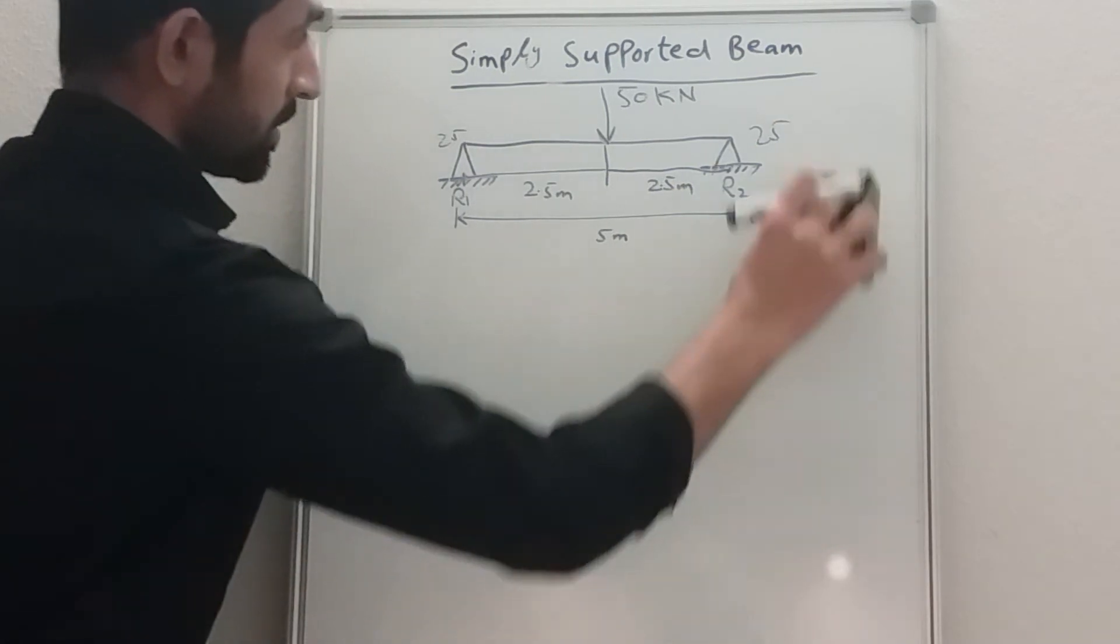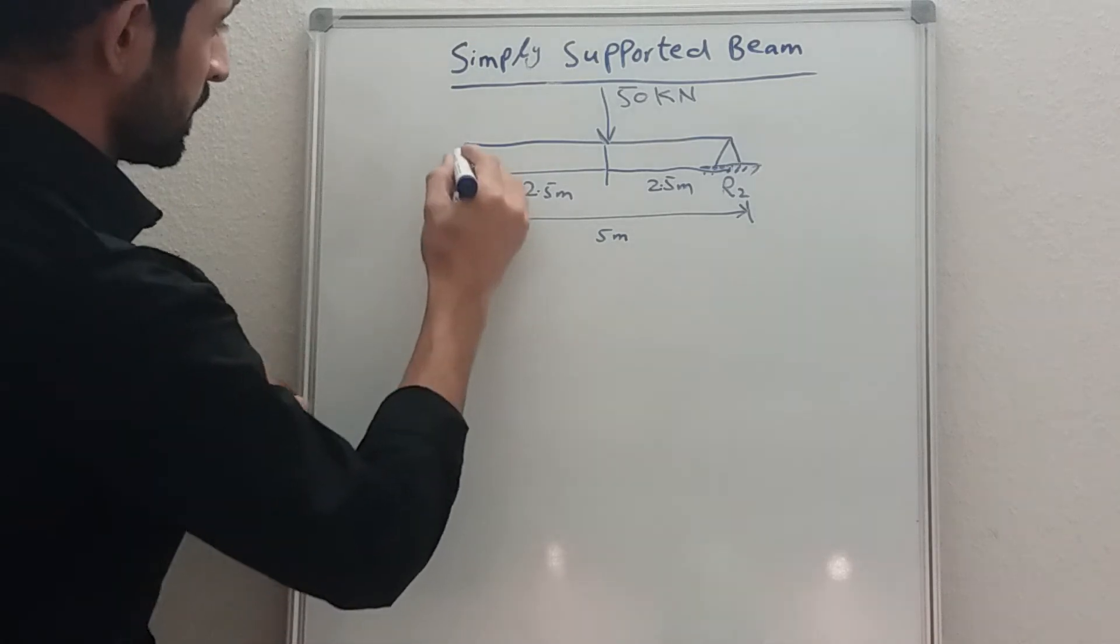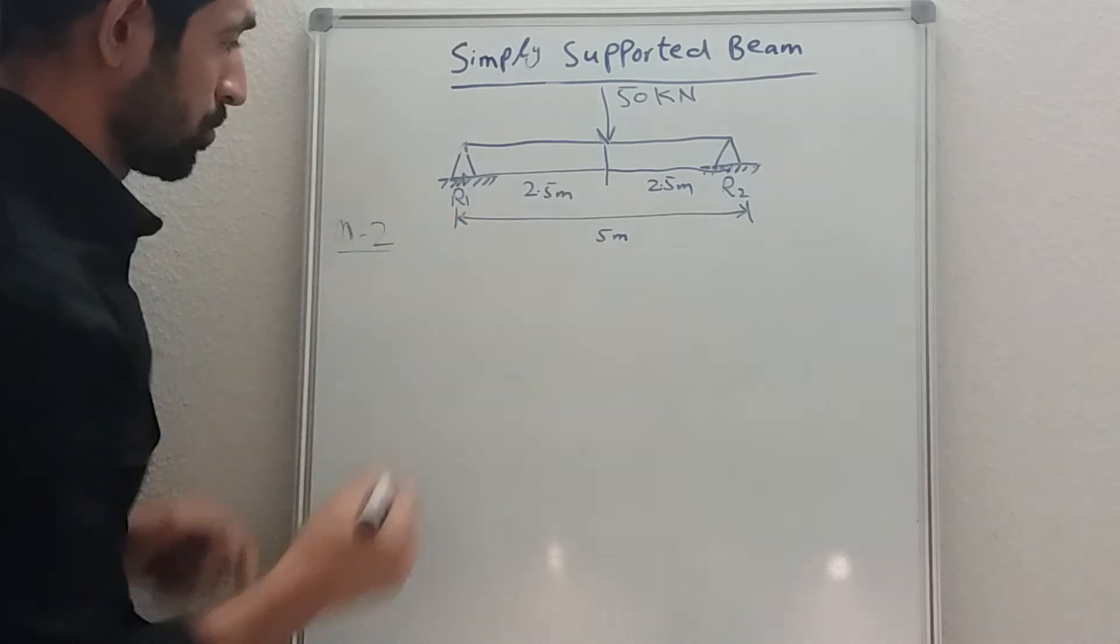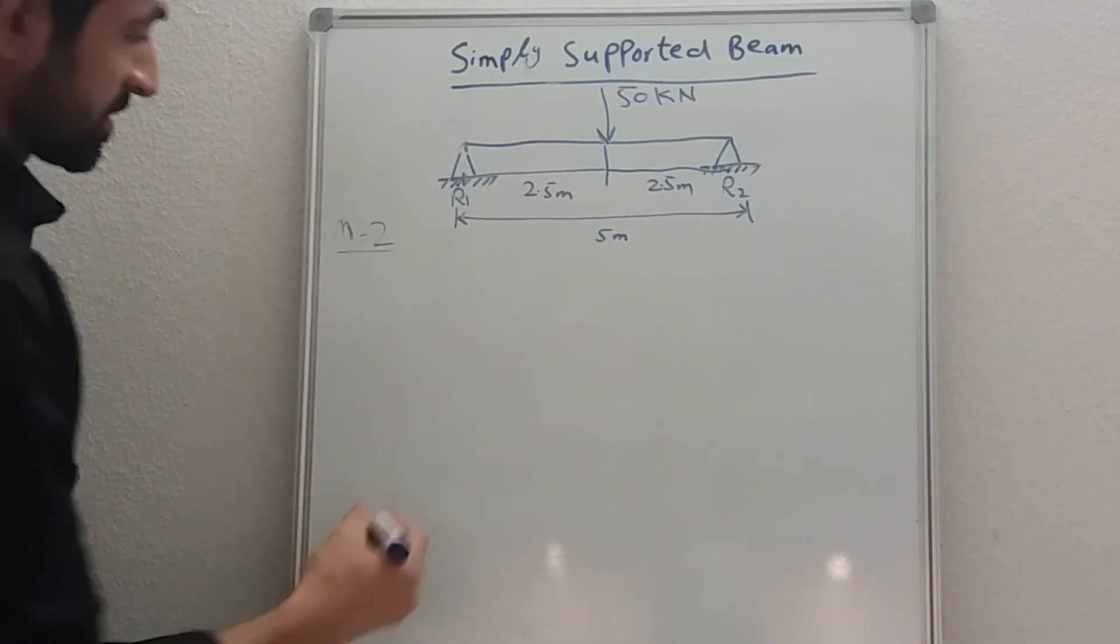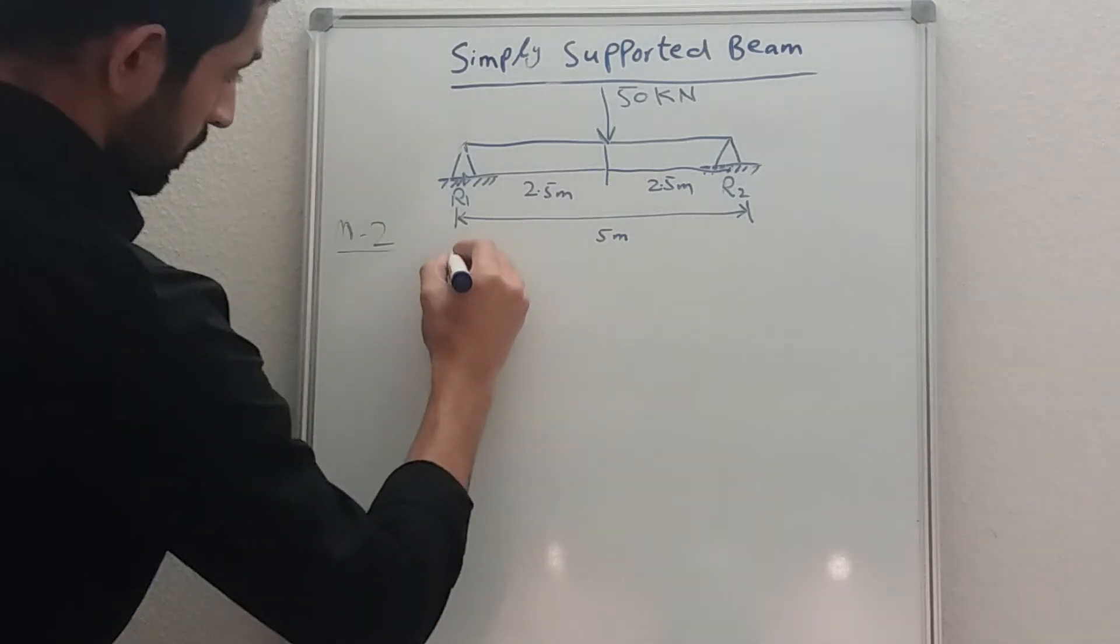So the second method, which is recommended I would say, and you can use this method for all kind of beams. So I'll just say method two. So how you gonna calculate the reactions? First you need to calculate the total load. Total load is 50 kilonewton as you can see.